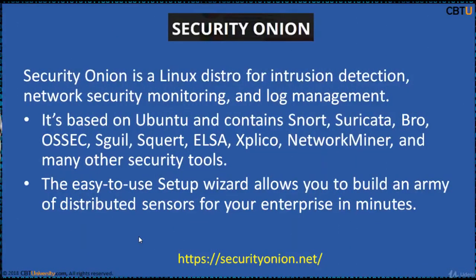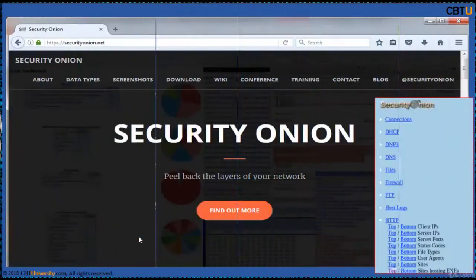Security Onion is a Linux distro for Intelligent Detection, Network Security Monitoring and Log Management. It's based on Ubuntu and contains Snort, Suricata, Bro, OSSEC, Sguil, Squert, ELSA, Xplico, Network Miner and many other security tools. The easy-to-use setup wizard allows you to build an army of distributed sensors for your enterprise in minutes. This is the webpage of Security Onion.